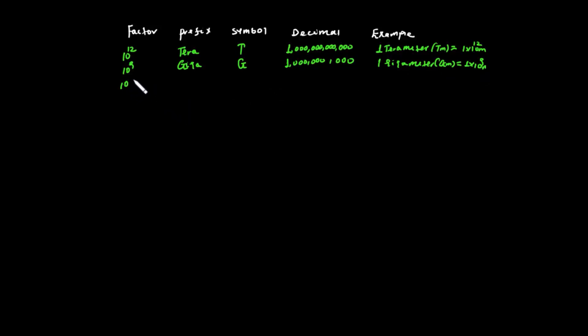10 to the power of 6 is Mega. Mega is written with the symbol M. The decimal equivalent is one million — that is 1,000,000.